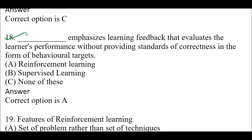Blank space emphasizes learning feedback that evaluates the learner's performance without providing standards of correctness in the form of behavioral targets. Option A: Reinforcement learning. Option B: Supervised learning. Option C: None of these. Right answer is Option A — Reinforcement learning.